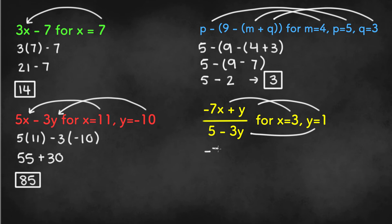Negative 7 times 3 is negative 21, and negative 21 plus 1 is negative 20, and negative 20 will be the numerator.